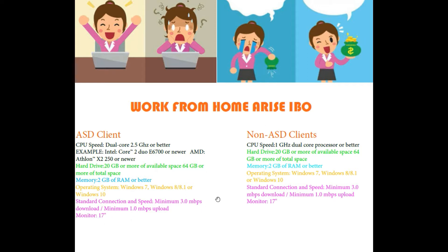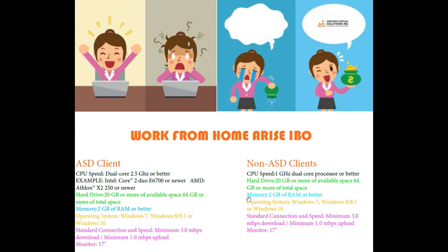If you are going into a client that is non-ASD, which means you don't need an ASD to work that client, then these are the requirements. CPU speed of 1 gigahertz dual core processor or better, which is not very much at all. Hard drive 20 gigabytes or more of available space, 64 gigabytes or more of total space, and memory 2 gigabytes of RAM or better. Operating system: Windows 7, Windows 8, 8.1, or Windows 10. Standard connection speed: minimum 3.0 mbps download, minimum 1.0 mbps upload. Again, a monitor of 17 inches or bigger.